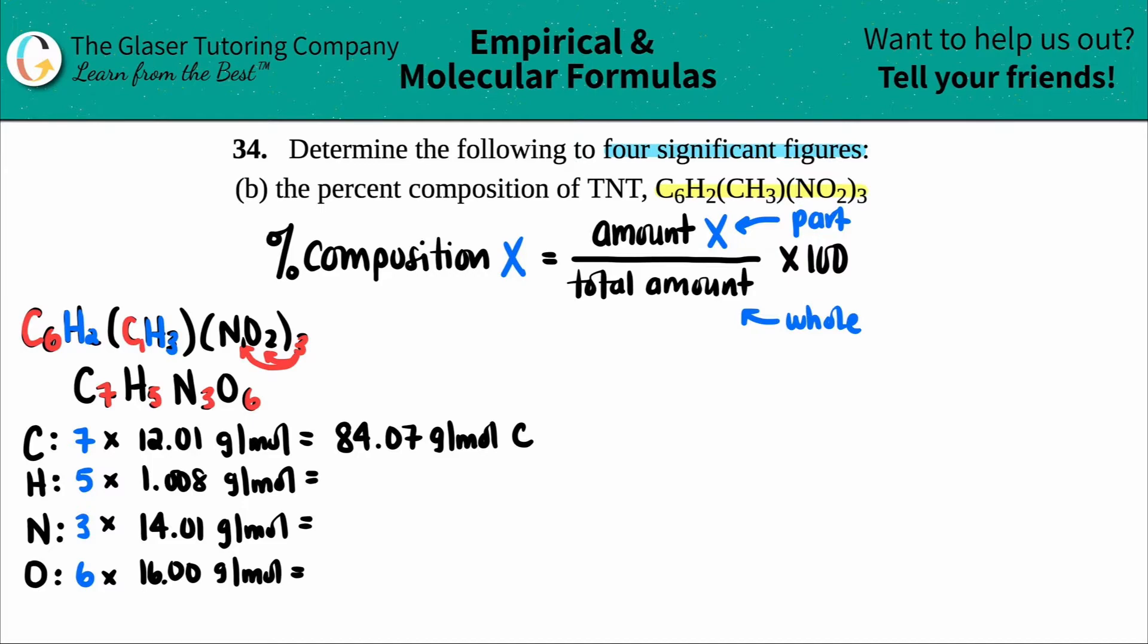The total hydrogen, five times 1.008, I get 5.04 grams per mole of the hydrogen. For nitrogen, I do three times 14.01, so I get 42.03 grams per mole, and that's of the nitrogen. And then the oxygen, six times 16, is 96. I'm just going to add the two zeros just to keep it concise. So 96.00 grams per mole, and that's oxygen.